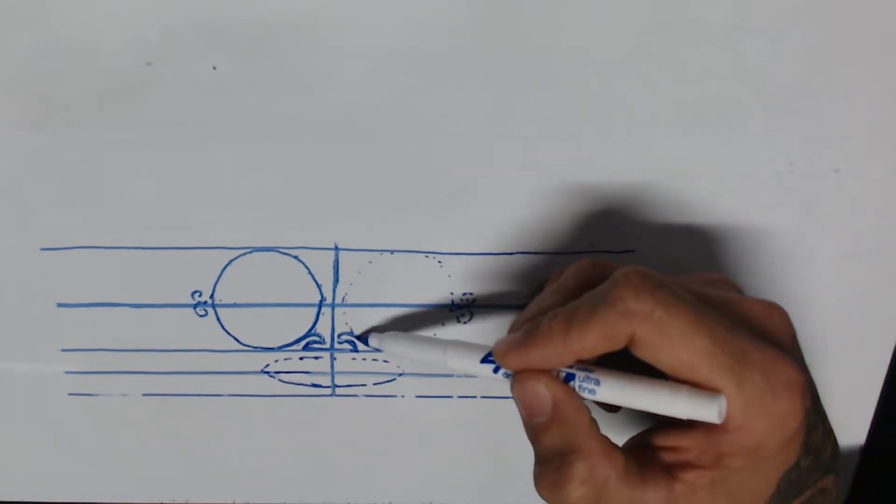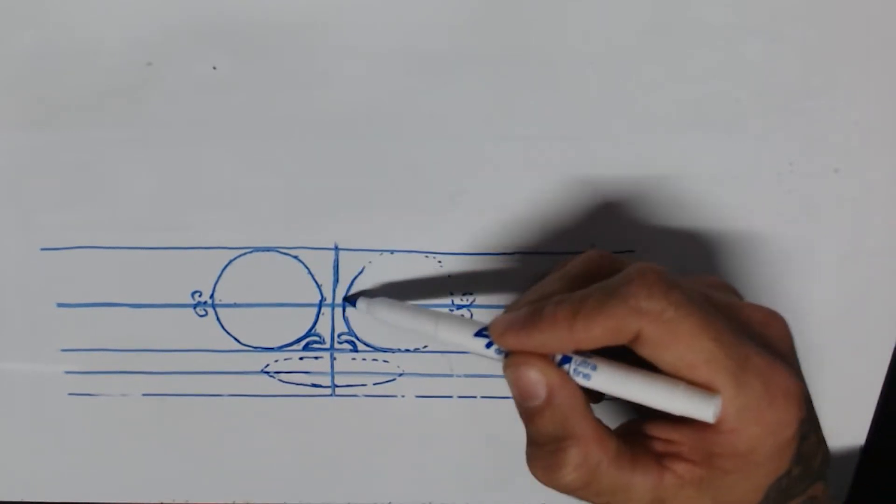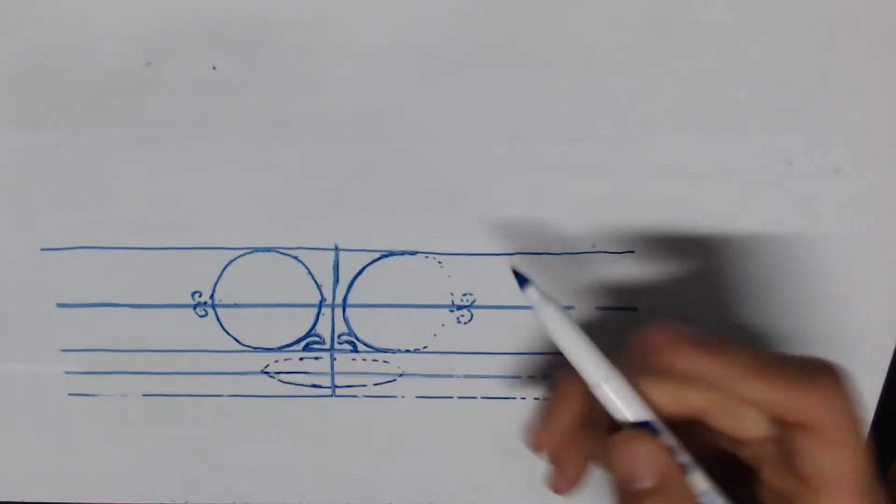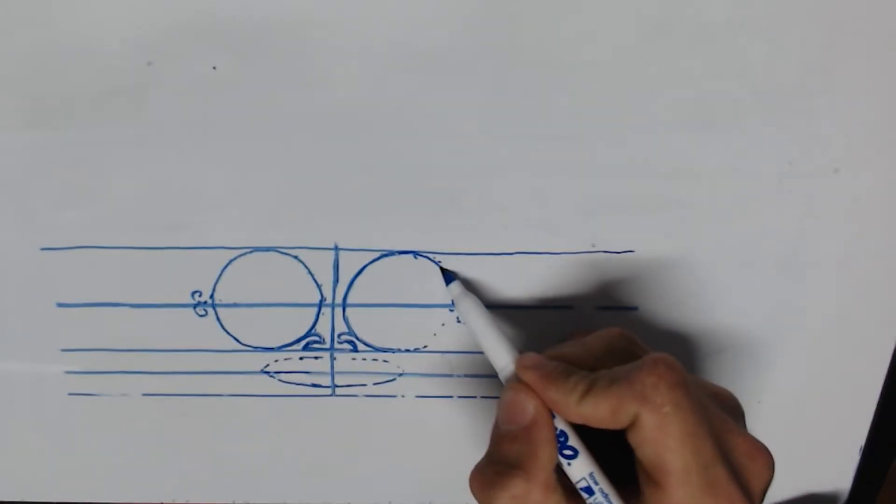Yeah, and then the lips. The eyes are usually round, but sometimes a little bit, how would you say, like a seed shape. Okay. You know, on the side.